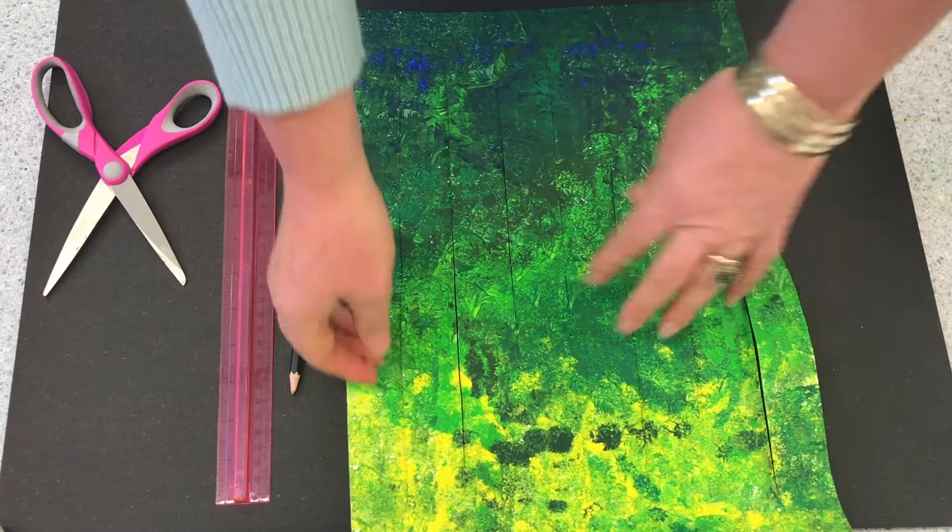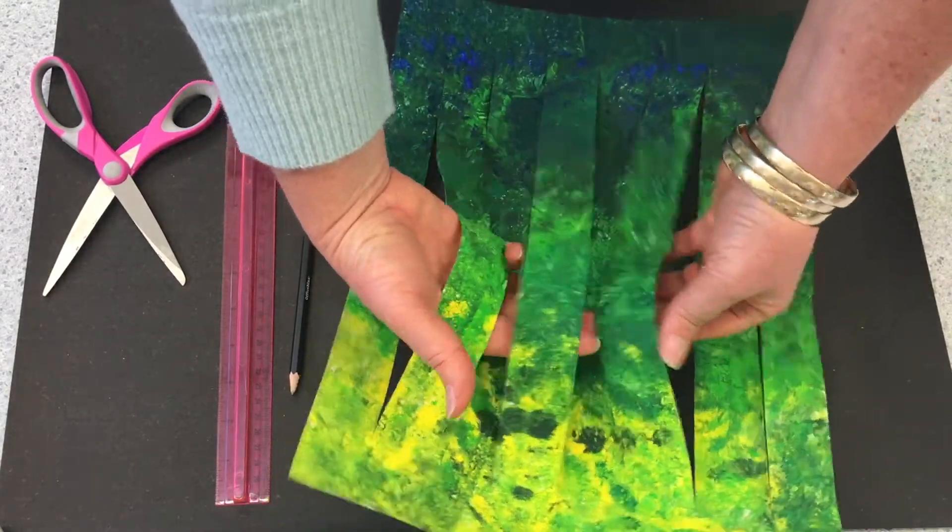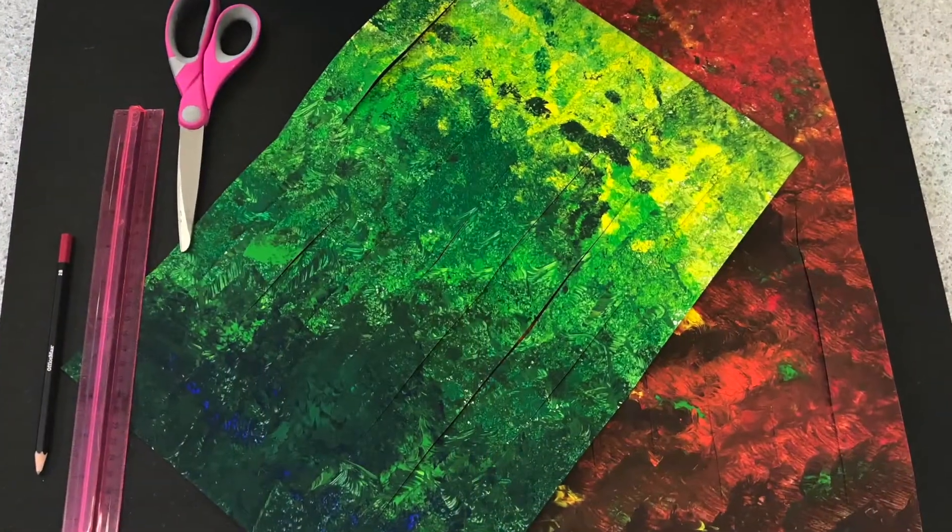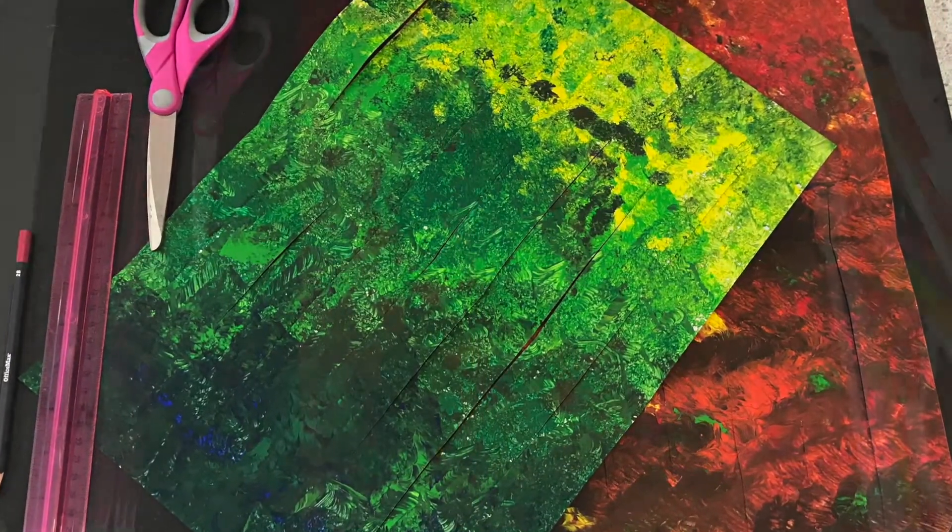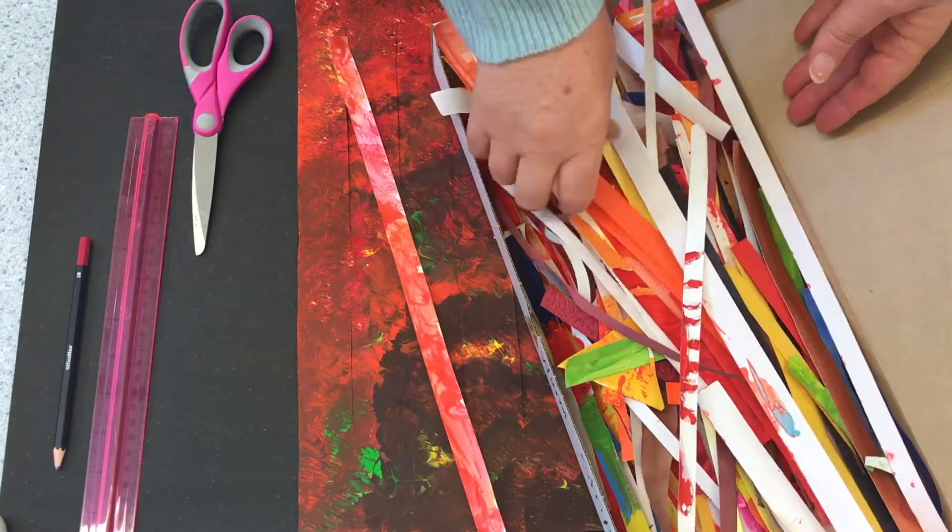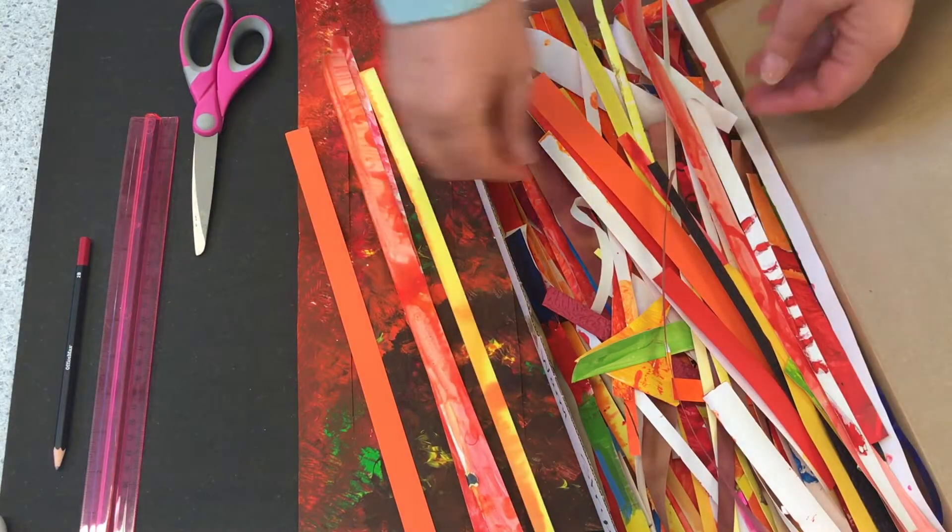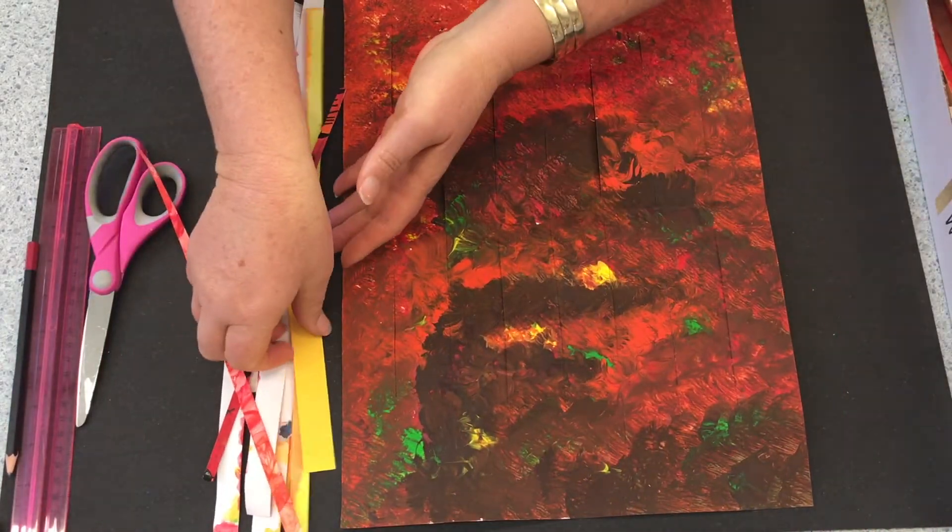You will be weaving strips of paper in between each of these cut strips. First I'm going to demonstrate weaving the autumn background painting. Select cut strips of any width that you have, as long as they are of similar coloring as your background.